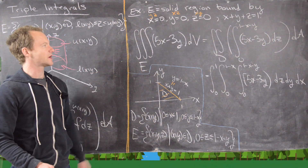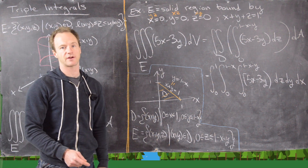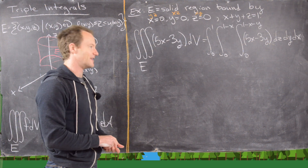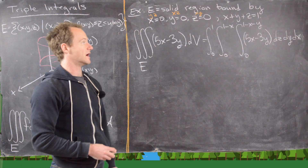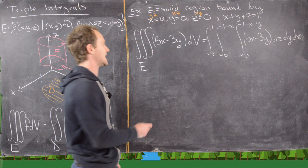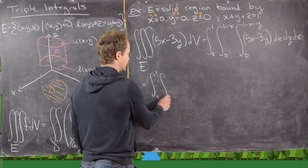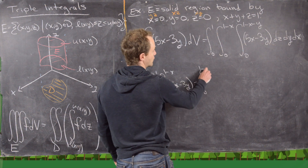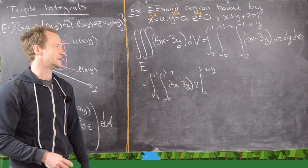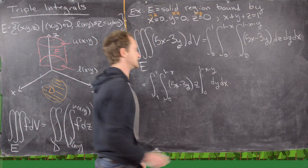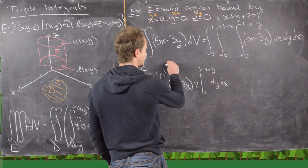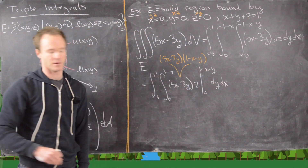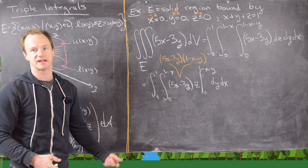So we've just got three calculus 1 problems to do in a row in the form of this iterated integral. First we do the z antiderivative. That gives us the integral from 0 to 1, integral from 0 to 1 minus x, of (5x minus 3y) times z evaluated from 0 to 1 minus x minus y, dy dx. So plugging in, this is going to be (5x minus 3y) times the quantity (1 minus x minus y), since plugging in 0 gives us 0.